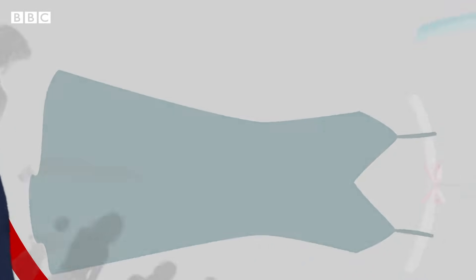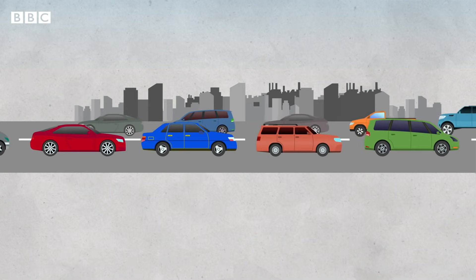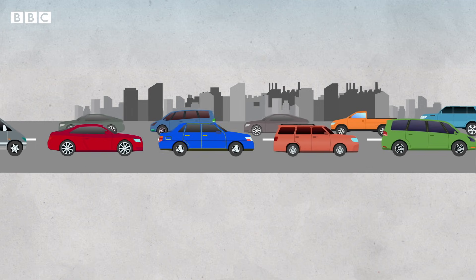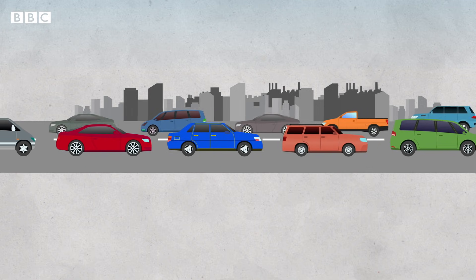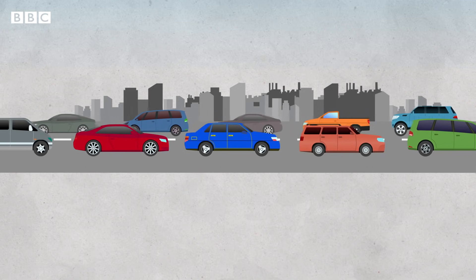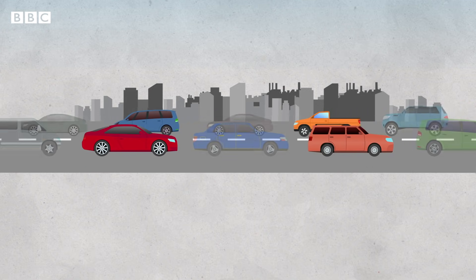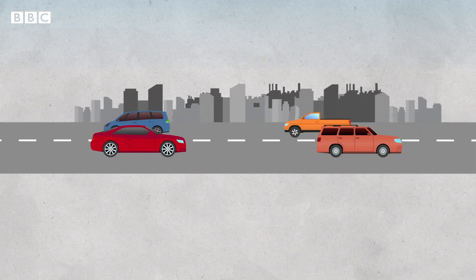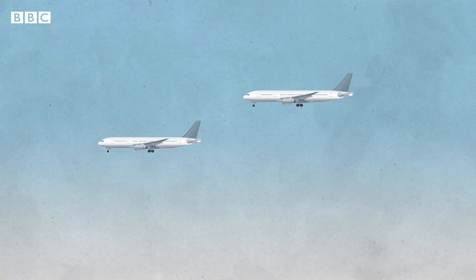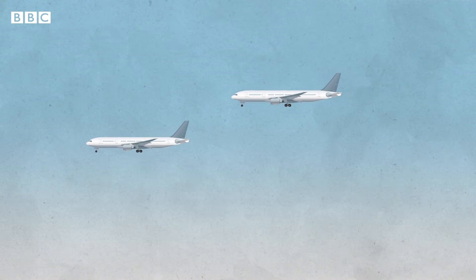In the developed world in particular, transport is a big part of your carbon footprint. Cutting down on the use of petrol or diesel cars and taking fewer flights is one of the most effective ways of reducing it.